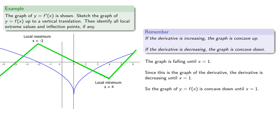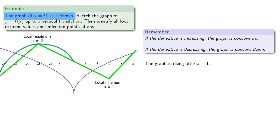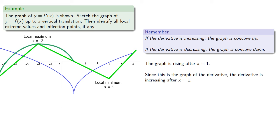The stick figure is the skeleton of the graph, so we draw a concave down graph that follows the skeleton. Similarly, the graph of f prime is rising after x equals 1, so the derivative is increasing after x equals 1, and the graph is concave up after x equals 1. We draw a concave up graph that follows the skeleton.